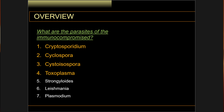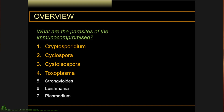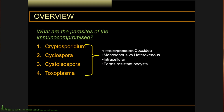Those four are Cryptosporidium, Cyclospora, Cystoisospora, and Toxoplasma. I would have to mention that there are a lot of other parasites more often than not associated with immunocompromised people — these would include Strongyloides, Leishmania, and Plasmodium — which we will not be discussing in this lecture series but will be covered in further lectures.